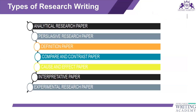There are different types of research writing. First is analytical research — I showed you one example of this. You talk about one particular thing and you do not talk about any conclusions. You just give information about a particular topic.